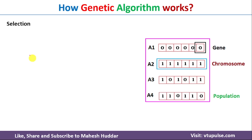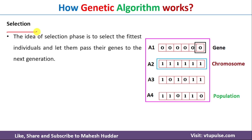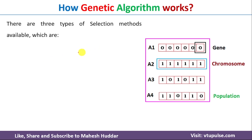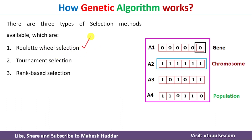The next step is selection. The idea of the selection phase is to select the fittest individuals. For example, A1 and A2 may be the fittest, so we select them for crossover; or A1 and A3 may be the fittest in another case. There are basically three selection methods: the first is roulette wheel selection, the second is tournament selection, and the third is rank-based selection. I will discuss each of these in detail in the next video.